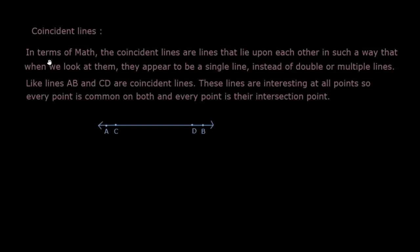Coincident Lines. In terms of math, the coincident lines are lines that lie upon each other in such a way that when we look at them, they appear to be a single line instead of double or multiple lines. As we can see from here, A, B and C, D are coincident lines.